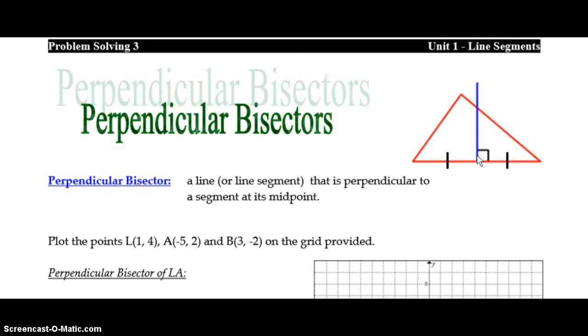With perpendicular bisectors, the only difference is that the bisector does not actually pass through one of the vertices. What it does instead is it passes through the midpoint of one of the sides and is perpendicular to that side. It may or may not pass through the vertex, but the two characteristics is that it passes through the midpoint and it's perpendicular.